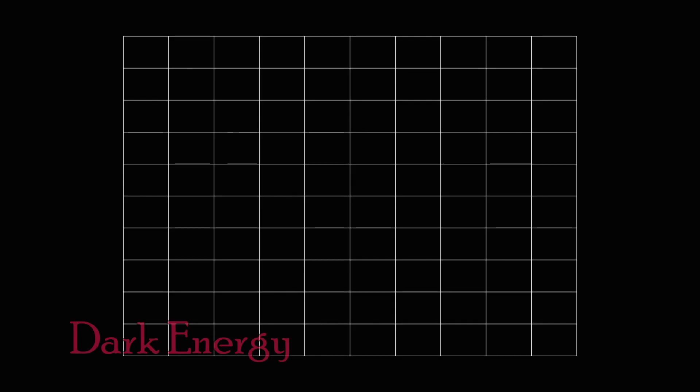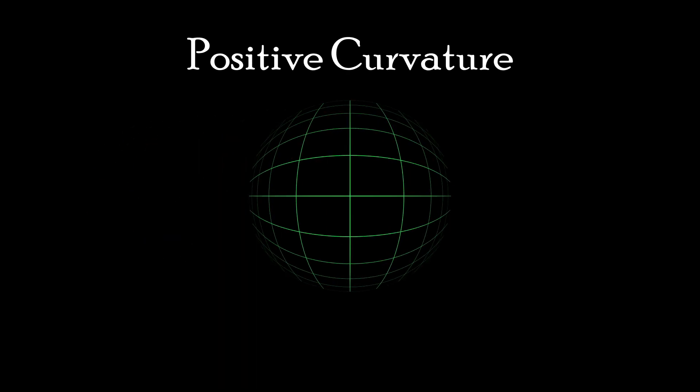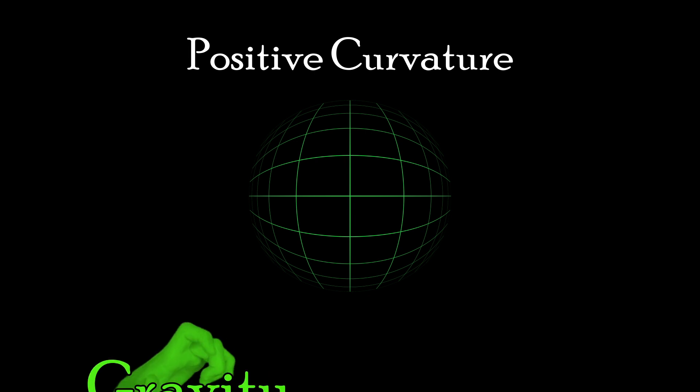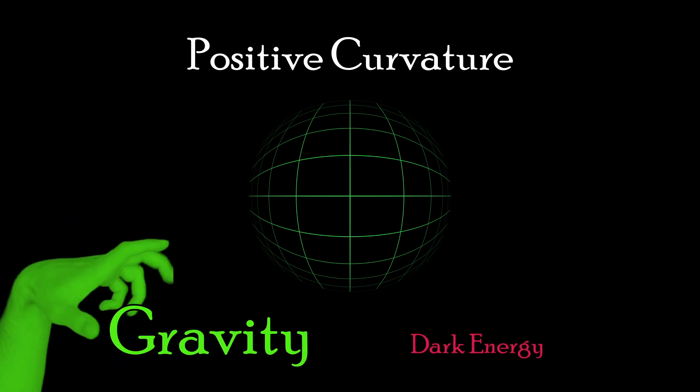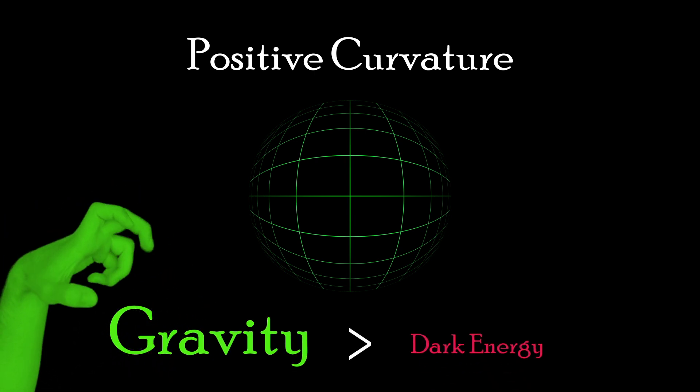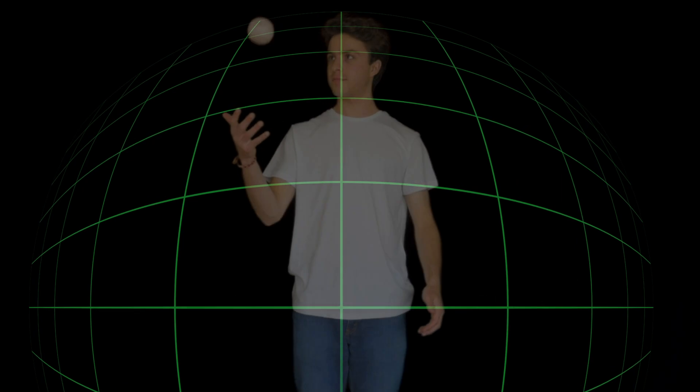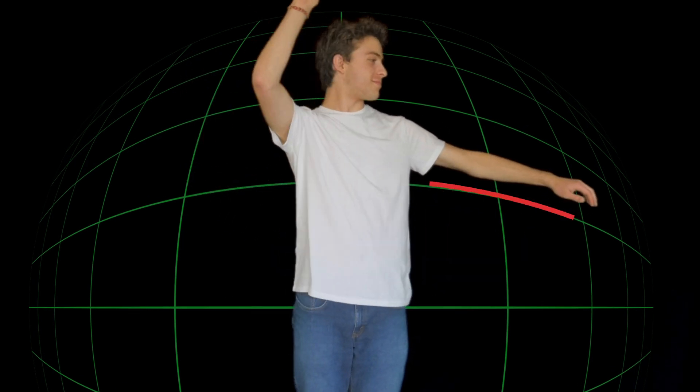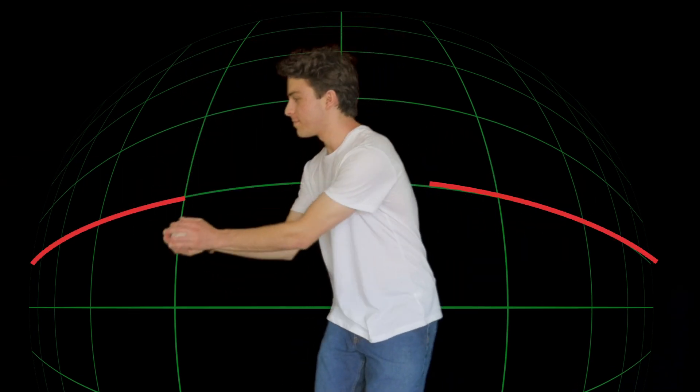It turns out that while dark energy expands spacetime, gravity curves spacetime to slow down the expansion. So depending on how much mass there is in the universe leaves us three possibilities. Positive curvature occurs if the universe has a great enough mass to override the expansion, effectively curving into itself. If I threw a ball, it would eventually come back to me on the other side.